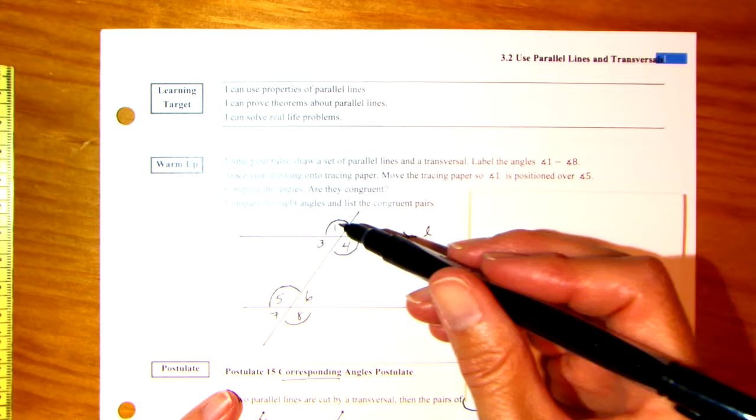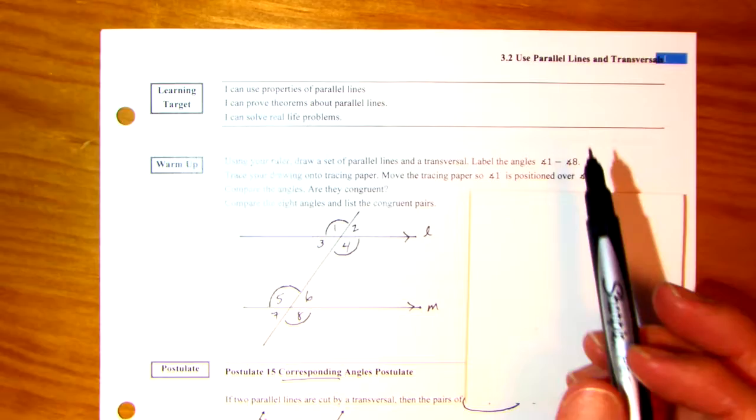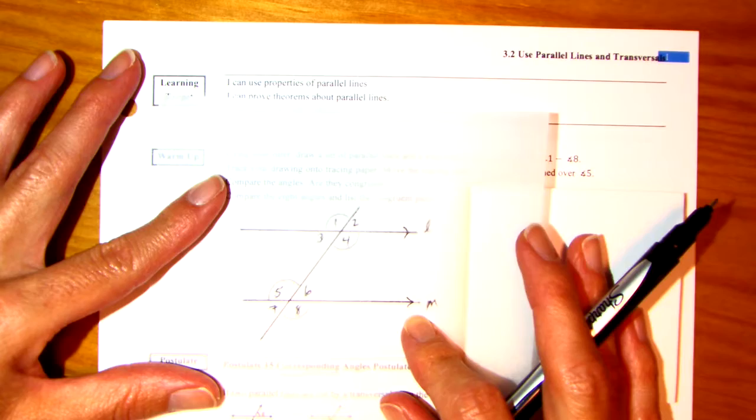Label the angles 1 through 8. 1, 2, 3, 4, 5, 6, 7, 8. And then trace your drawing onto tracing paper. So look at that. I put the exact same thing on there.